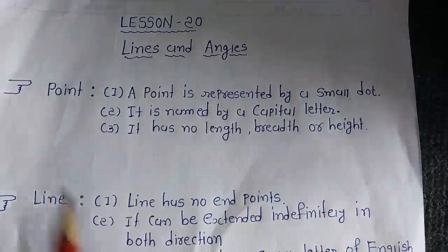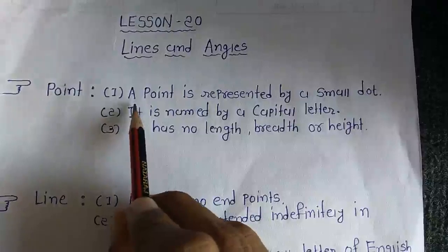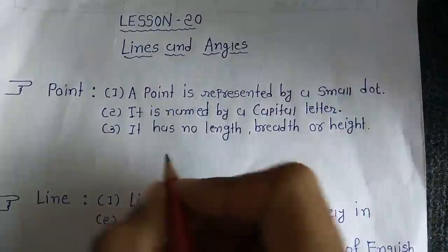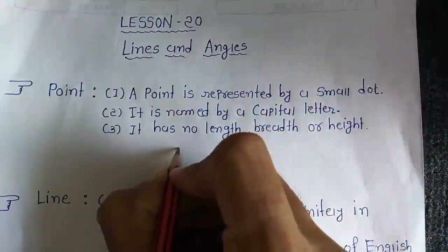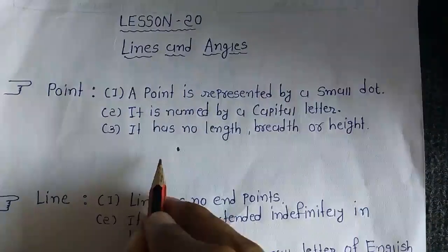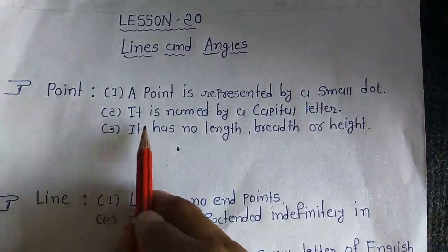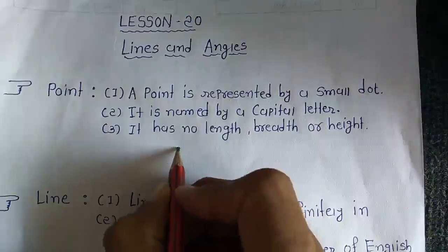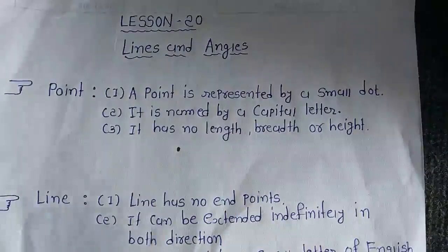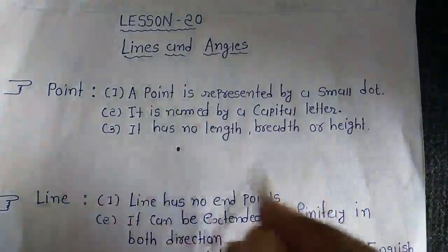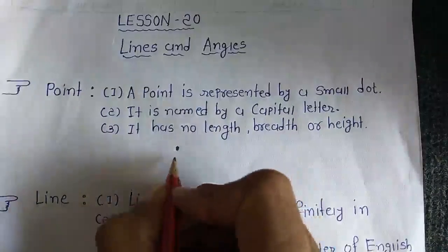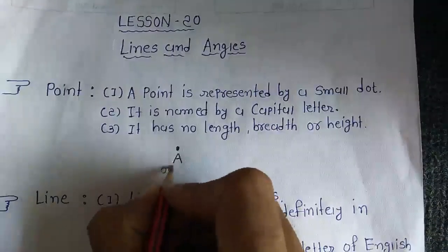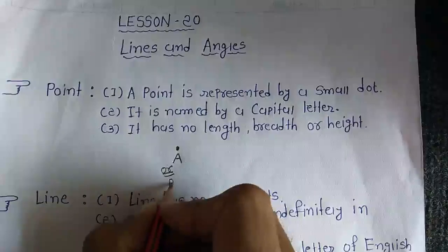First concept: Point. A point is represented by a small dot. Koi bhi point hai, usko represent karna hai toh dot se represent karein. This one is a dot. Second: it is named by a capital letter. Toh capital letter se hi de sakta ho, small letter mein nahi. Ye point hai, usko name dena hai toh capital A likh sakta ho, or point A.